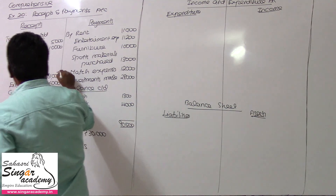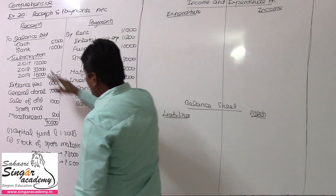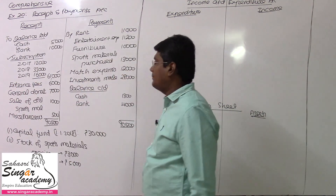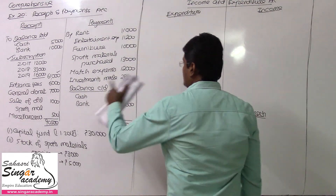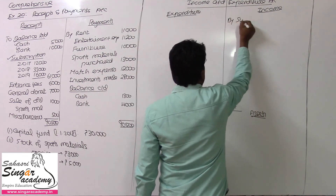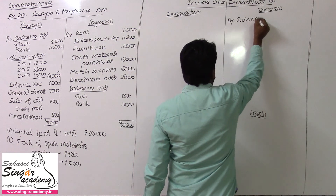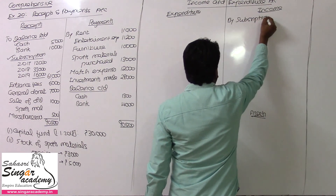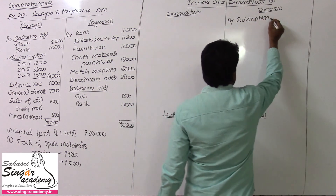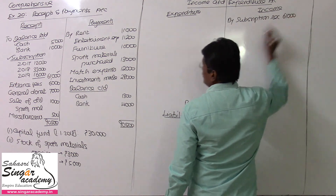Subscription received: 61,000 rupees. We need to make the adjustments. So, 61,000 will be the subscription. Subscription received for the year, value being 61,000.